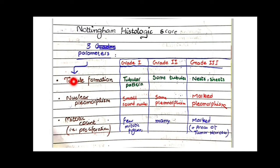As far as tubule formation is concerned, in grade 1 you will see tumor in the form of tubules. In grade 2, when the tumor loses its differentiation, there will be only some tubules. In grade 3, where the tumor completely loses differentiation, there will be no tubules — just nests and sheets of cells.